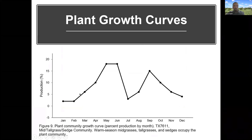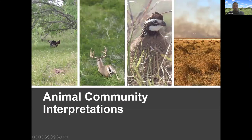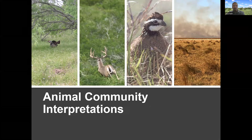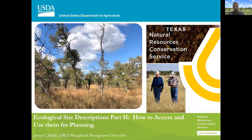Many range sites include plant growth curves showing what time of year forage production occurs — very useful for grazing planning and drought monitoring. Finally, there'll be an animal community interpretation section with a narrative describing what habitats might occur on the site for various species, both game and non-game. With that, I'll pause and turn it back to Charles.